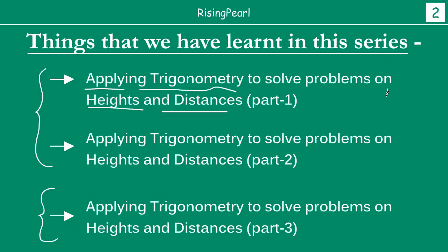One of the important things we have tried to highlight throughout the series is that our goal always has been to find a right triangle. We know that trigonometry is always in the context of a right triangle. Once we have found a right triangle and one of the angles — say theta — is given, and one of the 3 sides is given, then we can find out all the other sides.